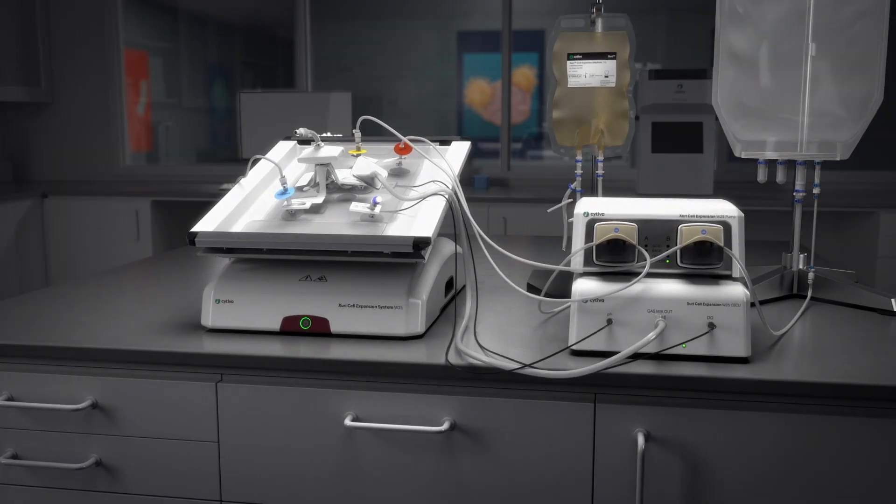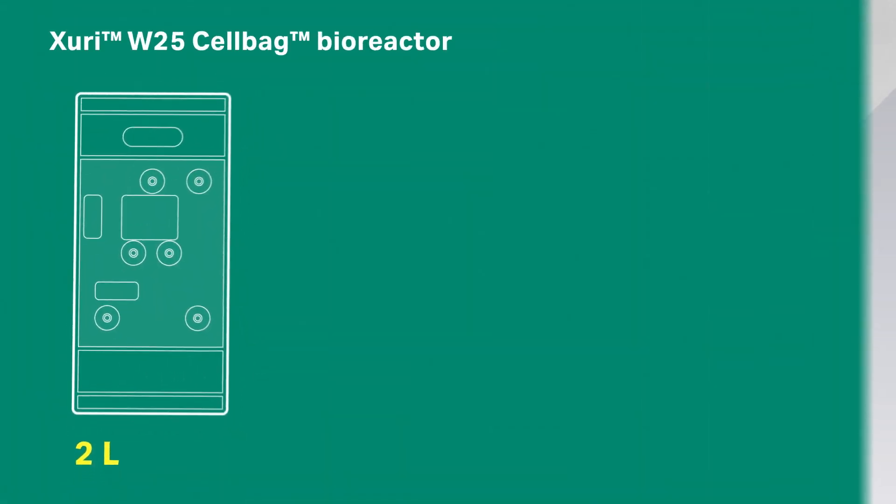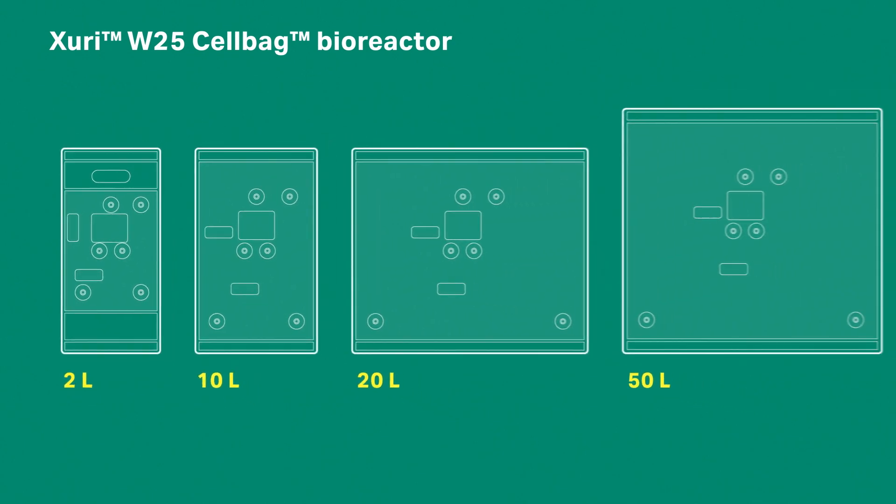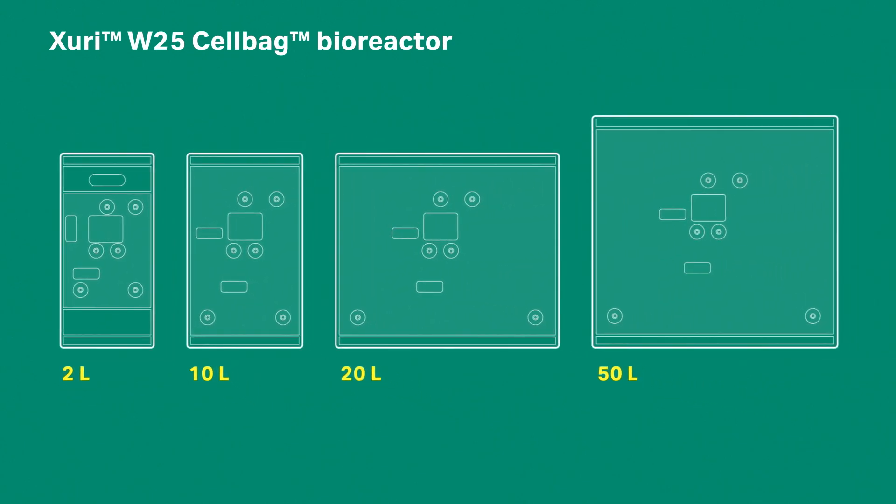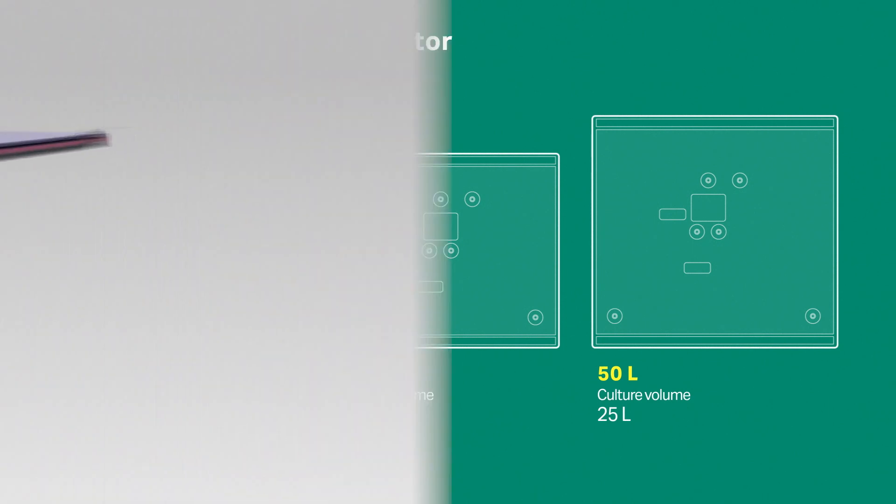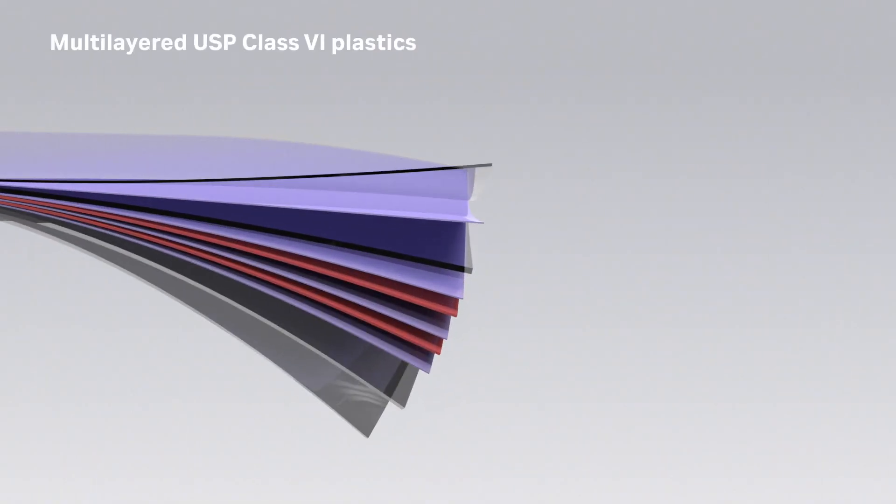Our Zuri system cell bag bioreactors come in 2, 10, 20 and 50 liter bags. You can use it for any culture volume from 300 milliliters to 25 liters.